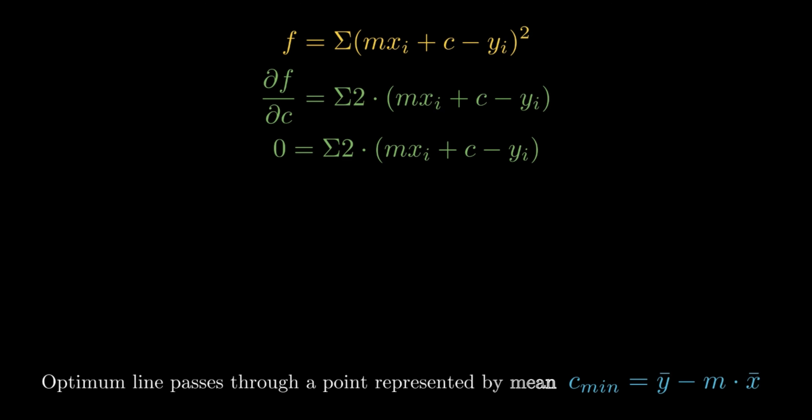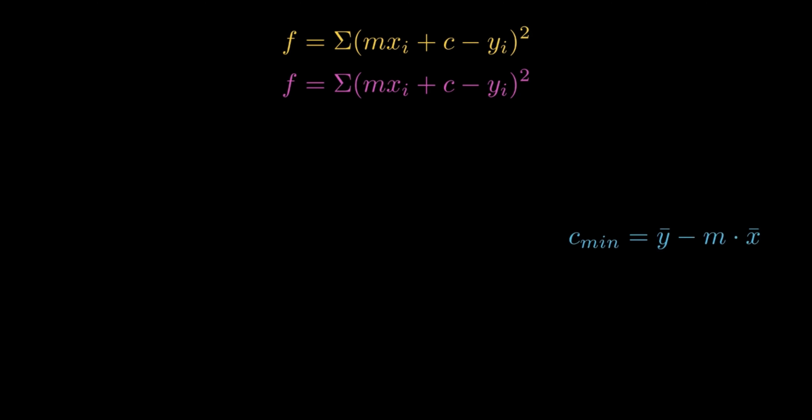Now the same drill: partial derivative with respect to m. We have already got the minimum value of c set aside. That makes calculations a lot easier, doesn't it? Then we use the product rule again and then use the chain rule again, and boom, you go on to find the value of m_mean.